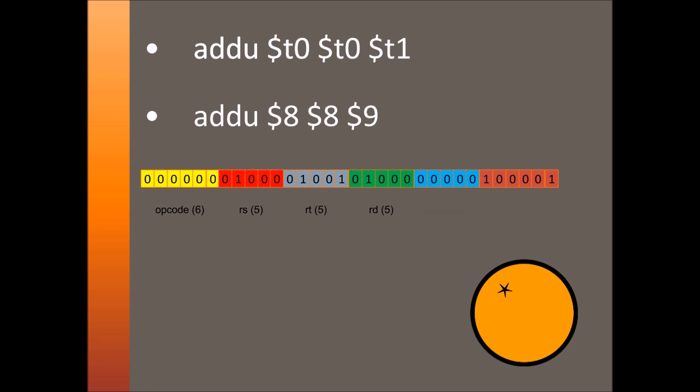Next, we have five bits for the shift amount, which is not used by add and therefore would just be 0. The last field, function, is used to define which function will be performed on the register. This layout is an R-type. The bit pattern used by an instruction is based solely on how the instruction needs to be processed, so whether any other instruction is an R-type is not because of its logical functionality, but rather which components in the processor it utilizes.